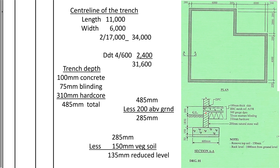Once we find the center line, we shall multiply by the width, then multiply by the thickness of the concrete. If you want to know how to calculate the center line, there is a link at the top right of the screen — kindly click on that link. You'll be able to see in detail how to calculate the center line of such a shape with a recess at the corner.